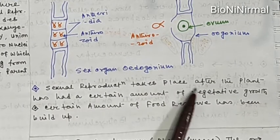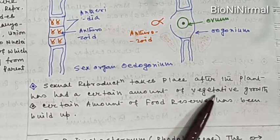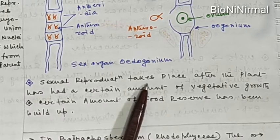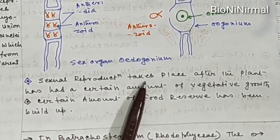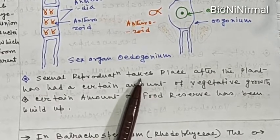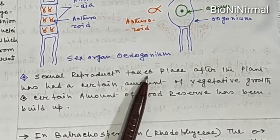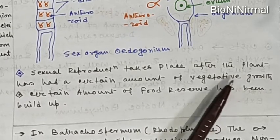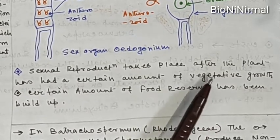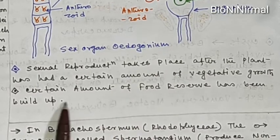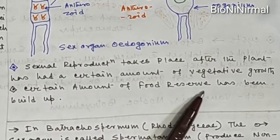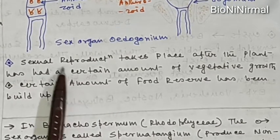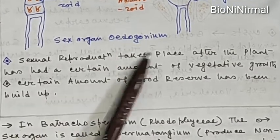Sexual reproduction takes place after the plant has had a certain amount of vegetative growth. Algae can show various modes of reproduction — vegetative, asexual, and sexual. Sexual reproduction only takes place after the plant body becomes mature and a certain amount of food reserve has been built up. When these two criteria are fulfilled, the algae undergo sexual reproduction.